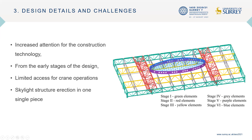Here we can see the stages for the erection. First we created the perimeter beams shown in green, then we erected the space trusses marked in red, then the next stage was the yellow longitudinal trusses. In stage four we erected the gray elements, with the central ones serving as support for the skylights. The purple element gives the perimeter support for the skylight structure, and the last stage was the erection of the skylight structure.